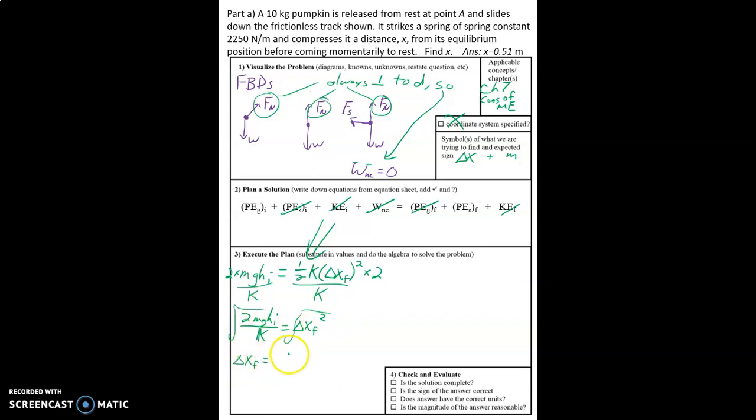Delta x f equals square root two times 10 kilograms times a height of three meters. Oh and we're doing it in a different order. I got my g there. Acceleration due to gravity 9.8 and then height by k which is 2250 newtons per meter. Right now we go ahead and plug this in.